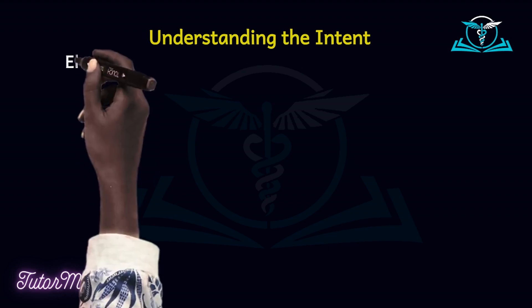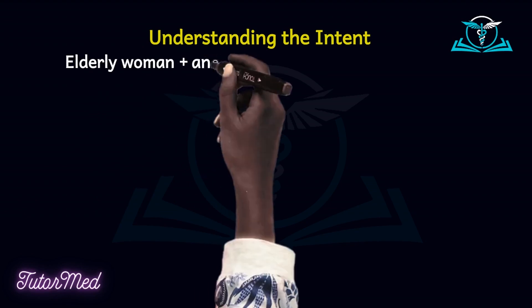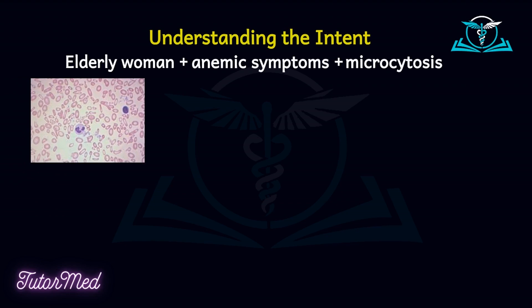One, the question said there was a 67-year-old woman — that is an elderly woman. Two, she came with a four-day history of palpitations and easy fatigability — that's likely to be anemic symptoms. And three, the peripheral film showed microcytosis. So the question can be summarized as: elderly woman, plus anemia symptoms, plus microcytosis. Once you actually summarize things, your brain can see what is going on in the question. That is why even in secondary education we are taught how to summarize bulky information — once you summarize the bulky information, you allow your brain to rest a bit and think. If you do not summarize and the question stem is very long, it becomes very tiresome.